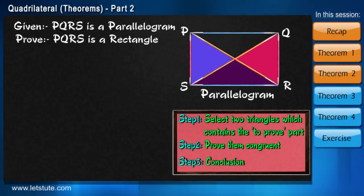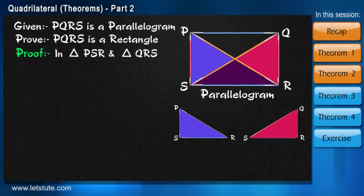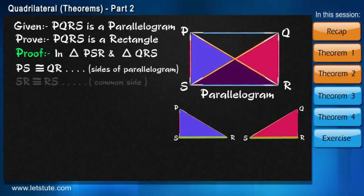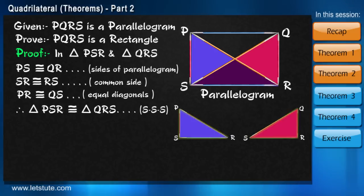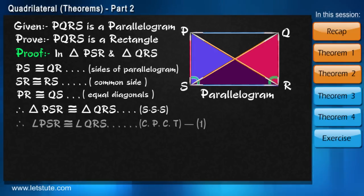Again we will follow the three simple and basic steps. Let's take two triangles. Now in these two triangles we have two opposite equal sides, one common side. And here PR and QS are also equal. So by side side side criterion triangles are congruent. Therefore angles PSR and QRS are also congruent as they are the corresponding angles of congruent triangles.